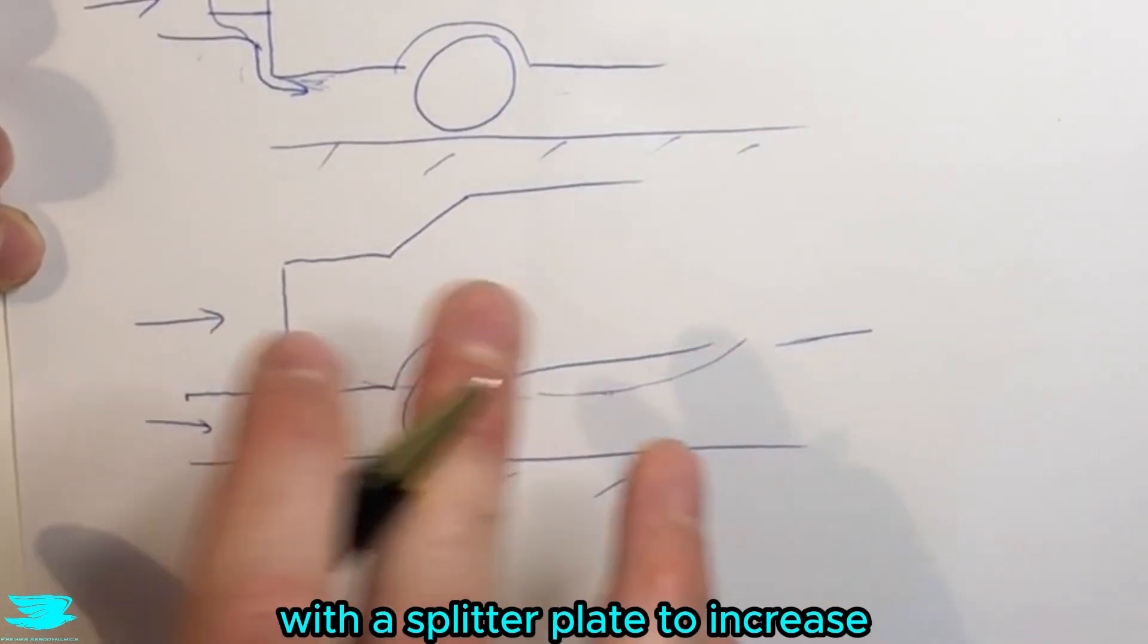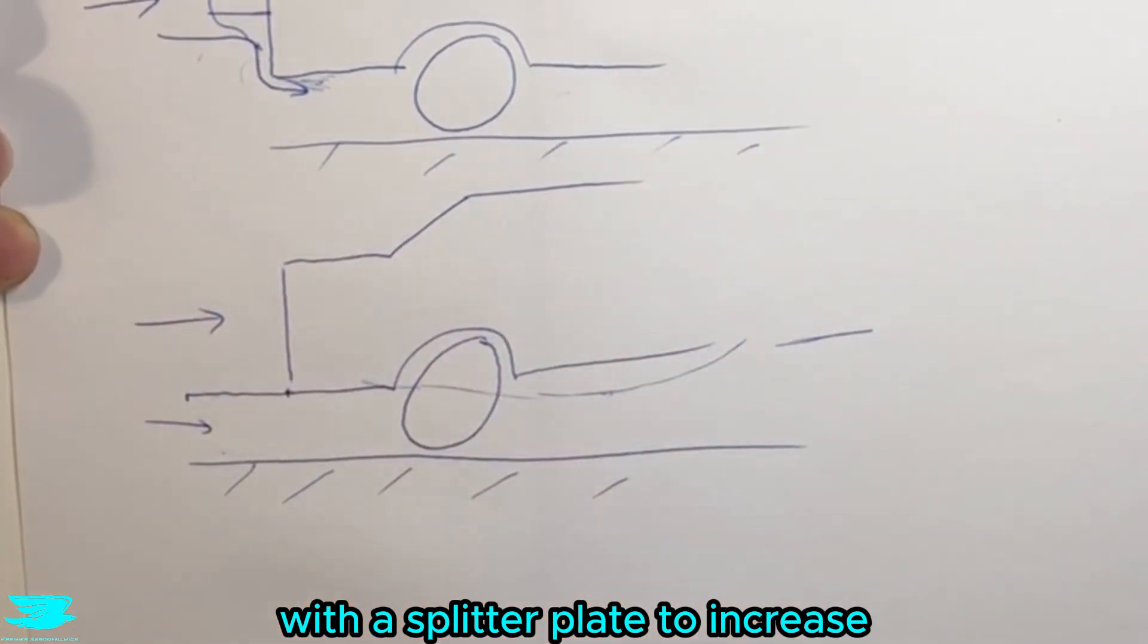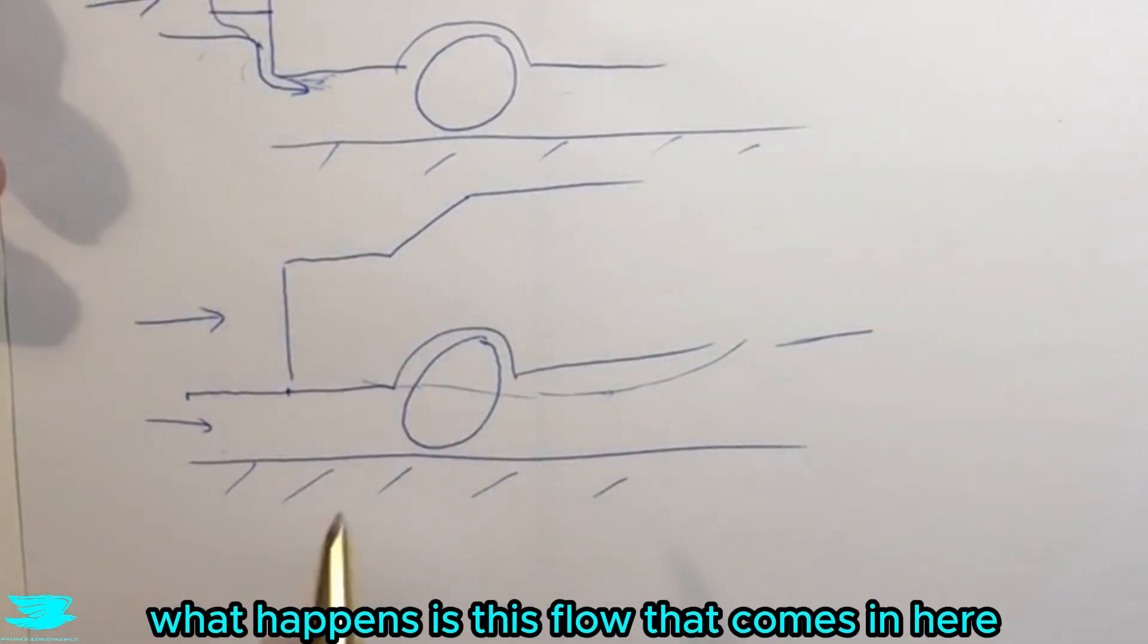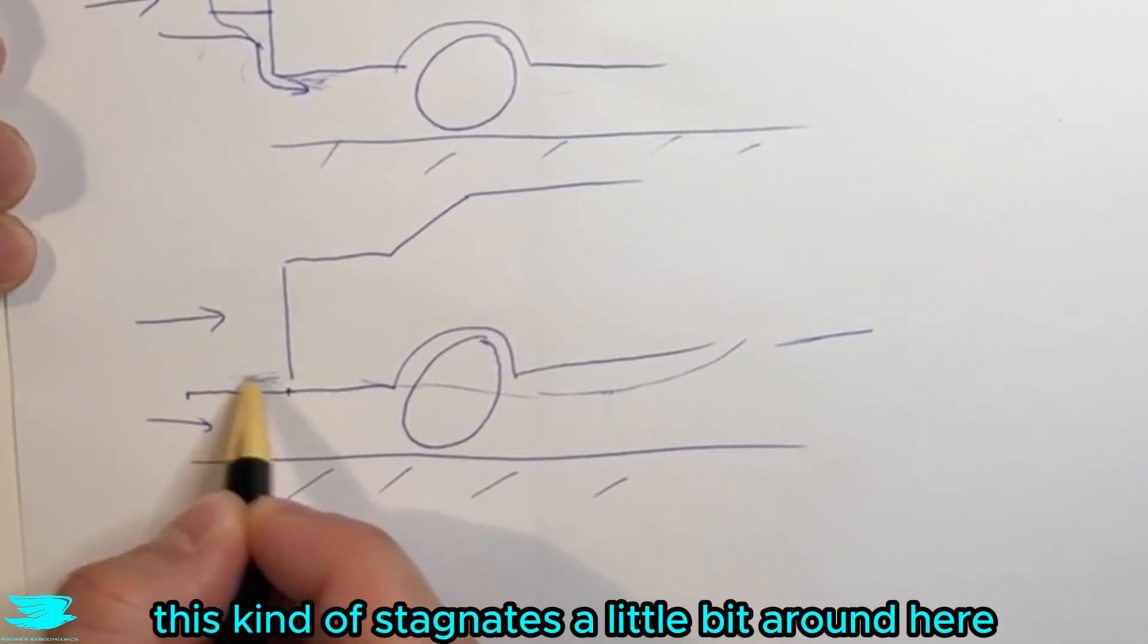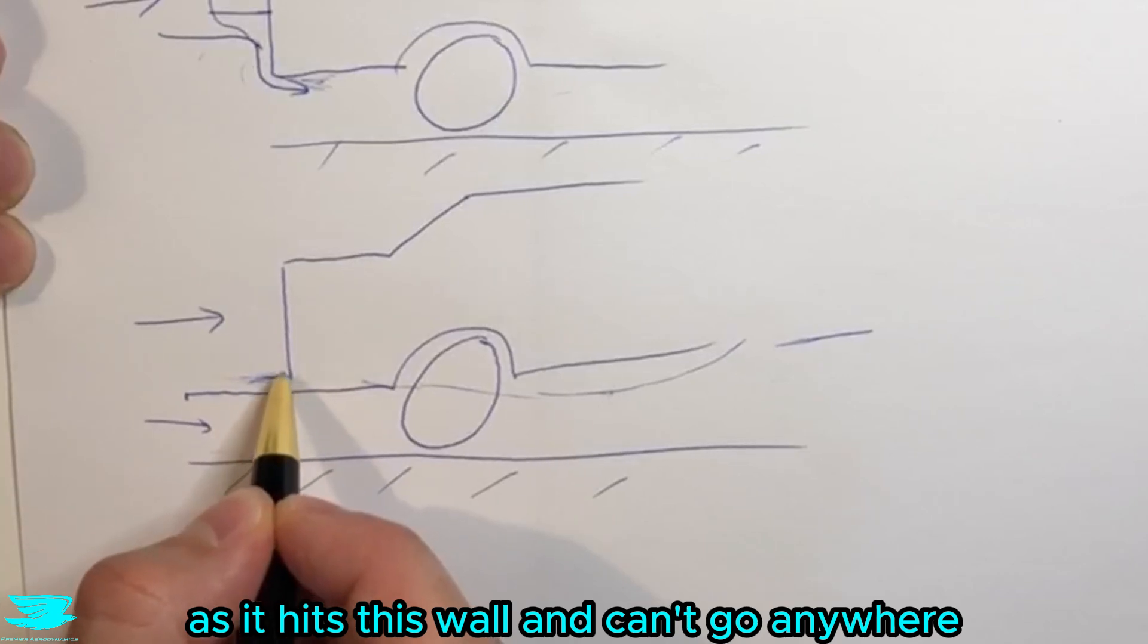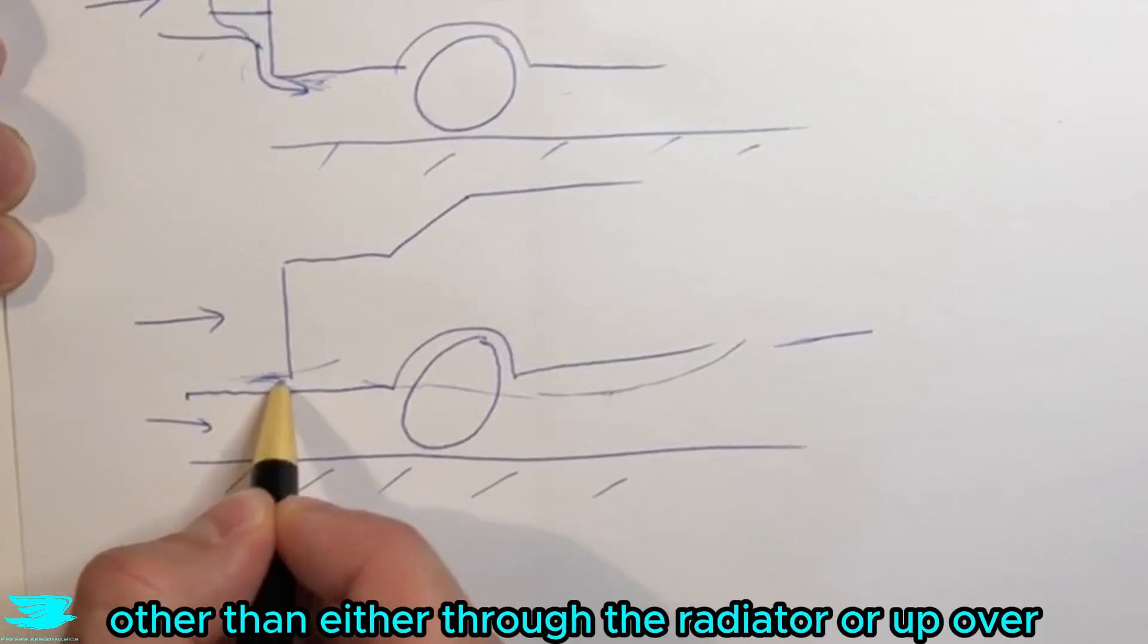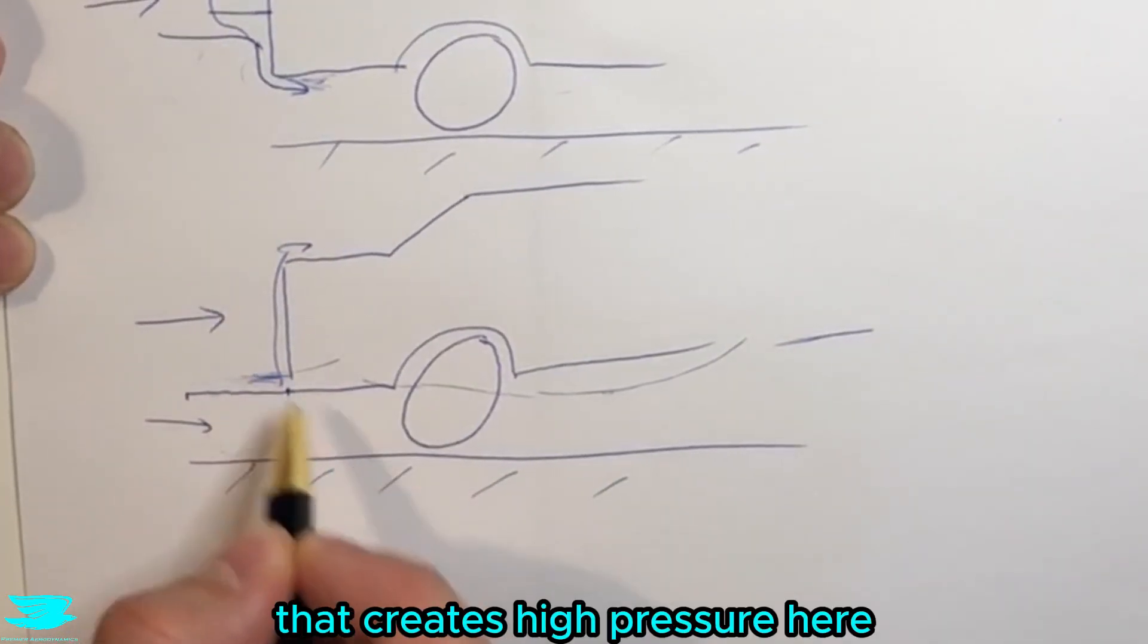And also, there are other things you can do with a splitter plate to increase the downforce. So naturally, what happens is this flow that comes in here that would usually come underneath, this kind of stagnates a little bit around here. This creates a lot of high pressure as it hits this wall and can't go anywhere other than either through the radiator or up over.